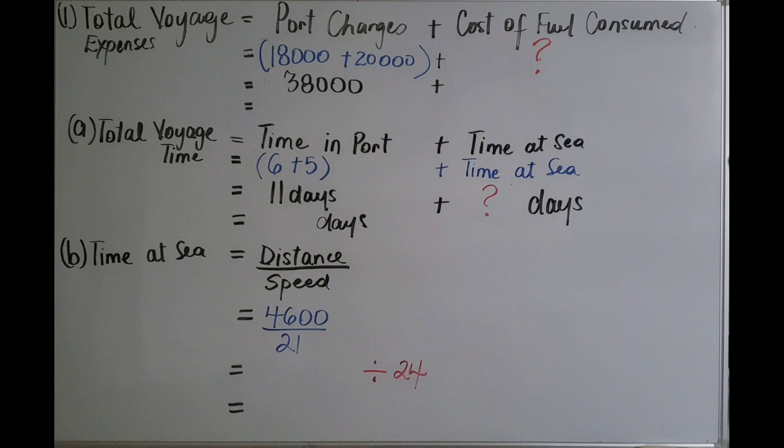Starting with A: voyage time equals time in port plus time at sea. We know the time in port because the question states the vessel stayed in Balboa for six days and Georgetown for five days, giving us 11 days in port. We don't yet know the time at sea, so we need to find that to complete A.